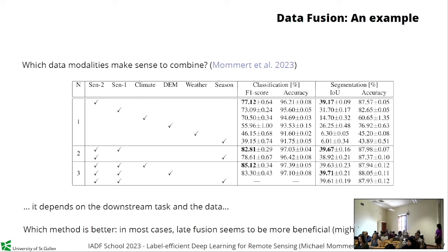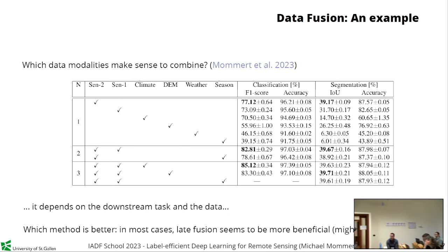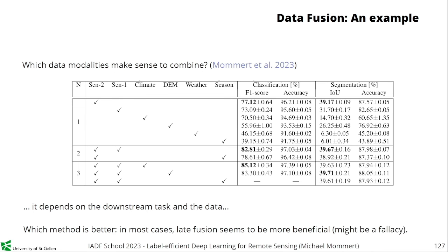On whether batch normalization layers make explicit input normalization redundant: normalizing the data is never a bad thing and can only help. In most cases unnormalized data works fine, but you might trip into a pitfall and it can take a while to realize normalization was the issue. For Sentinel-2, simply dividing counts by 10,000 is enough normalization — it brings the values to a much smaller, more well-behaved range that the model can work with easily.